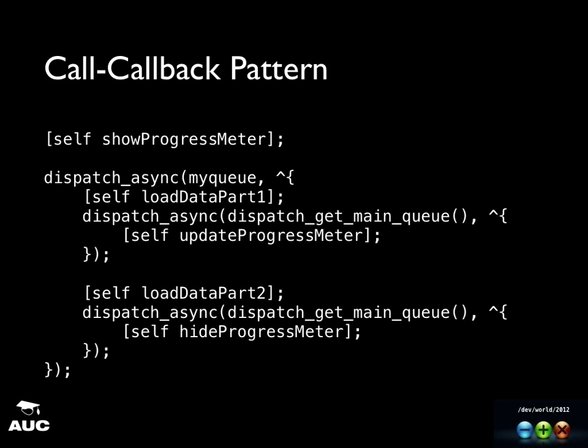Then you dispatch onto a background queue to do some processing, so you're not blocking the main queue from showing an activity indicator or responding to touch events. Then you load your data, dispatch back onto the main queue, and update your progress meter or UI to show the user that stuff is actually happening — because users don't like it when they tap and nothing works. And actually one thing I missed: on iOS, if you block the main thread for 10 seconds, your app will get killed by the operating system.